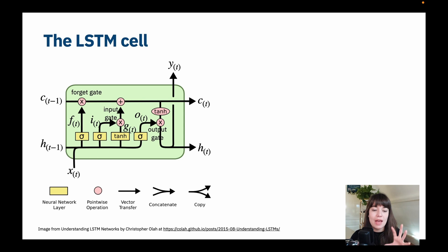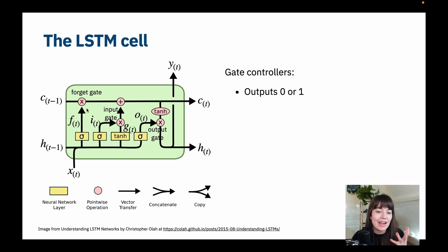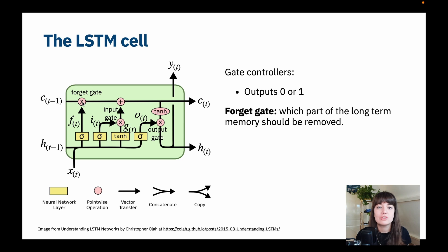We have gates and gate controllers. The sigmoid functions are called gate controllers, and they determine how much information from the input of this time step and the hidden state of the previous time step is going to be added to or extracted from the long-term memory. The long-term memory is the superstar of the whole LSTM cell, and we either add or extract things from it based on what the gate controllers decide. The forget gate decides which part of the long-term memory should be forgotten — which part we don't need anymore.